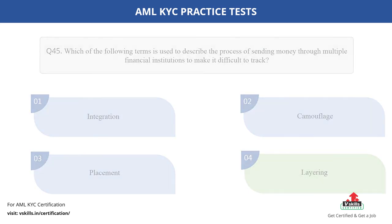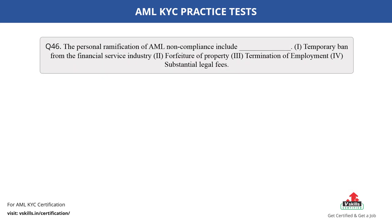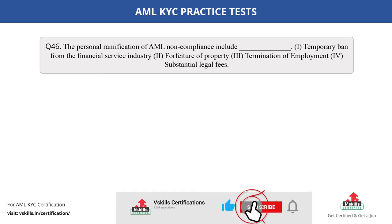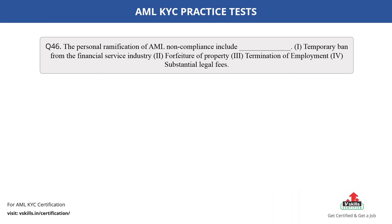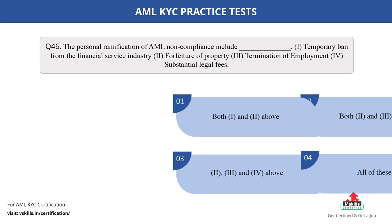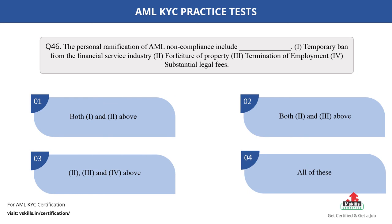Question number 46. The personal ramifications of AML non-compliance include dash. 1. Temporary ban from the financial service industry; 2. Forfeiture of property; 3. Termination of employment; 4. Substantial legal fees. Fill in the blank. The options are: A. Both 1 and 2 above; B. Both 2 and 3 above; C. 2, 3 and 4 above; D. All of these. The correct answer is option C.